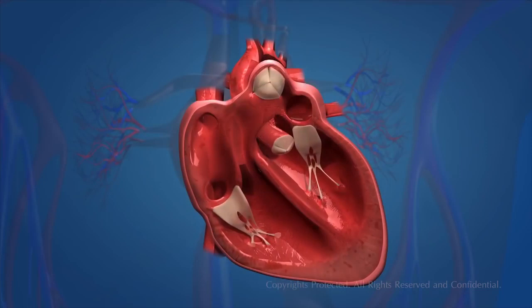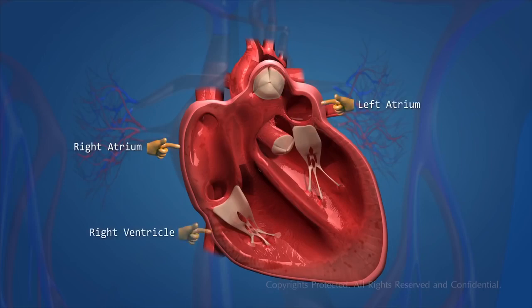The human heart has four chambers: the right atrium, the left atrium, the right ventricle, and the left ventricle.